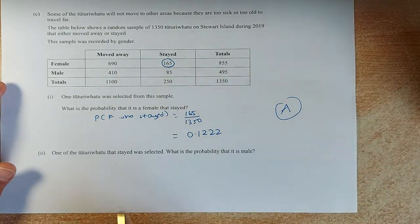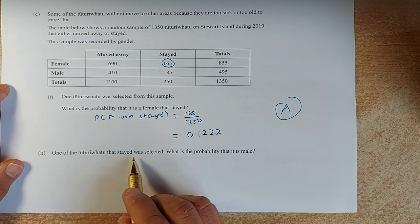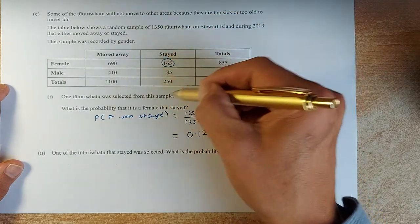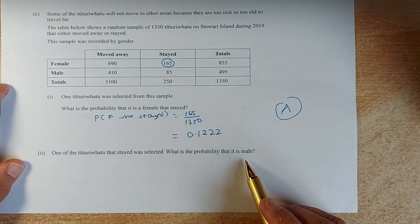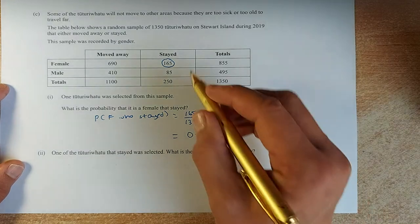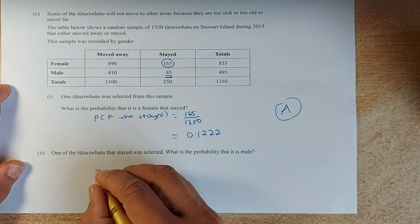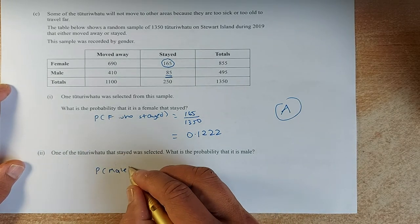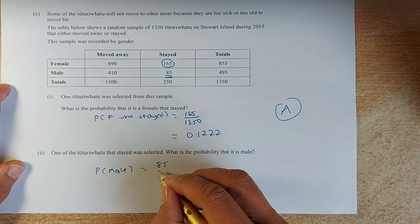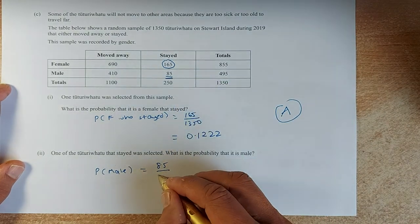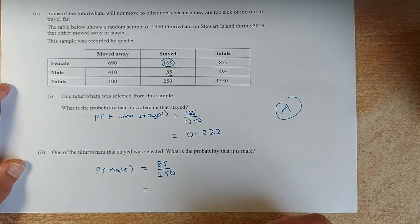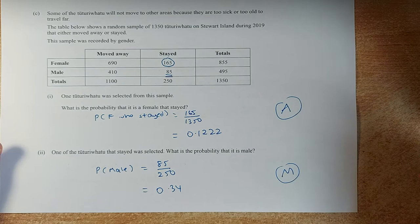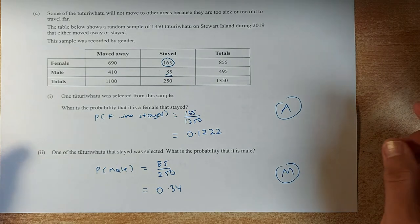Now we look at the second question. One of the Tuturiwhatu that stayed was selected. So you are looking at the bird that stayed, so the total is 250. What is the probability that it is a male? So the male is this number here. It's going to be probability of male is 85 out of the one who stayed 250. Put in your calculator and the answer is 0.34 and that is a merit.